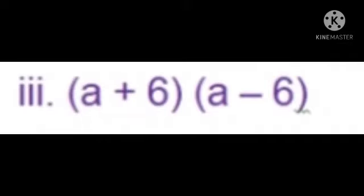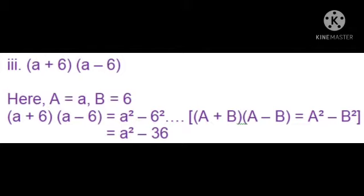Sum number 3: (a + 6) multiplied by (a - 6). In the first bracket we have a + 6 and in the second bracket a - 6. The terms in both brackets are the same; only the signs are different. We use the formula (a + b)(a - b) = a² - b², taking small a at the place of a and 6 at the place of b. Substituting: (a + 6)(a - 6) = a² - 6².